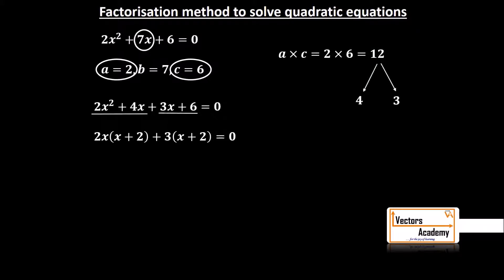Now you can see x + 2 is the common factor in both the terms. So I will take one bracket as x + 2 and the other bracket will contain the remaining terms, that is 2x + 3.